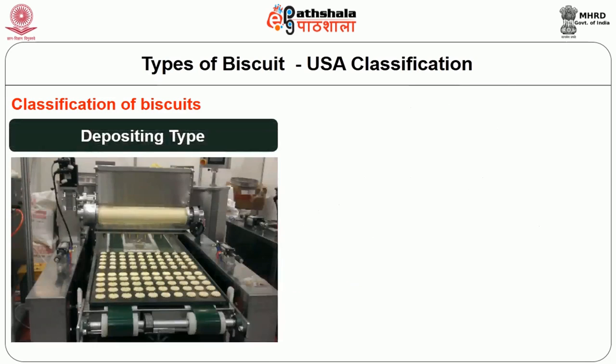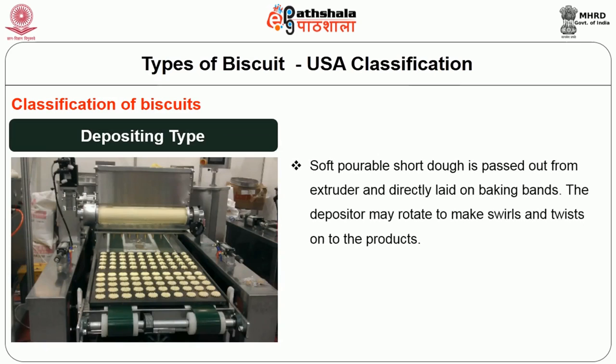The last type is the depositing type. The soft pourable short dough is passed out from an extruder and directly laid on the baking bands. The depositor may rotate to make swirls and twists onto the product. Cream treat biscuits are made by this depositing type method.